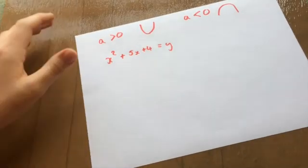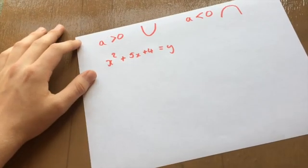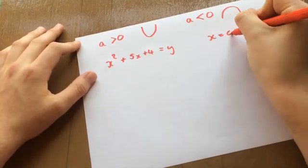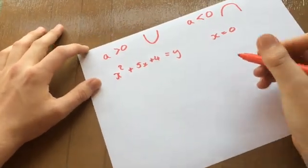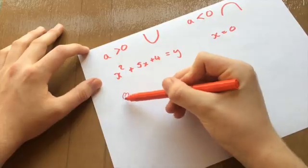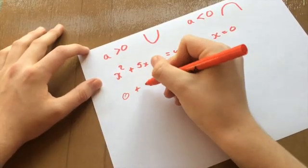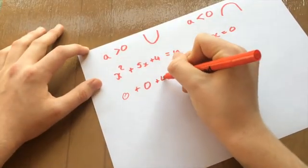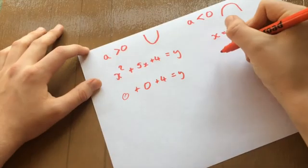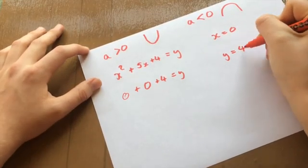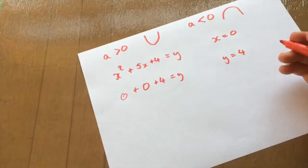However, to work out the y coordinate, what we have to do is simply set x to 0. And if x is equal to 0, then x squared is 0, plus 5 times 0, which is 0, plus 4 equals y. And that obviously means that y equals 4. That means that the line crosses the y axis at 4.